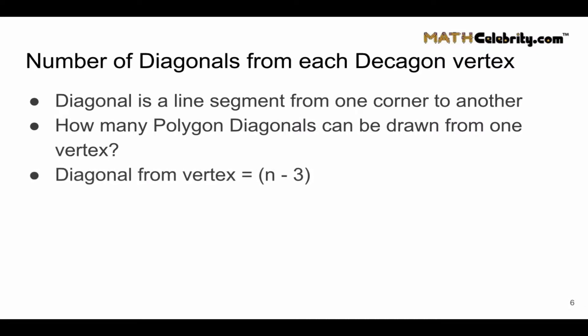Well, the standard polygon formula for the number of diagonals you can draw from one vertex is n minus 3, where n is the number of sides. With n equals 10 for a Decagon, we have 10 minus 3, which simplifies to 7.